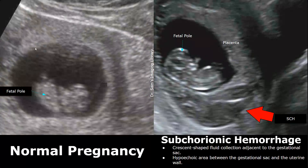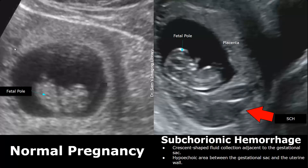Some hypoechoic and heterogeneous areas are seen around a normal gestational sac. They appear because of decidual reaction, in which there is thickening of the endometrium around the gestational sac. Another reason they appear is because of implantation bleeding, often seen in early pregnancy, as the embryo implants into the uterine lining causing bleeding. So the presence of some small hypoechoic and heterogeneous areas is normal — these areas are small blood clots, the endometrium, and blood vessels.